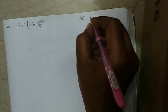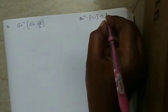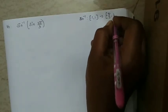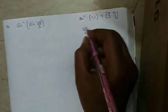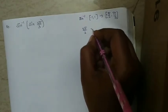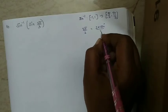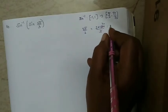The next question is sin inverse of sin(2π/3). When sin inverse of sin is given directly, we might write the argument, but we must first check whether it belongs to the required range. Sin inverse has range [−π/2, +π/2]. Converting 2π/3: that is 2×180/3 = 120 degrees.